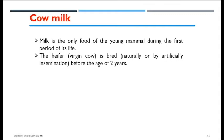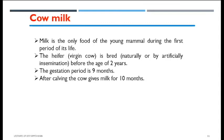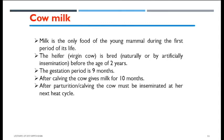The gestation period, or pregnancy time period, is nine months in the cow, which is usually measured in weeks or months. It is also considered to be on average 265 to 300 days, varying according to the breed of the cow. In general, a heifer gives birth to the first calf at the age of about 2 to 2.5 years old.